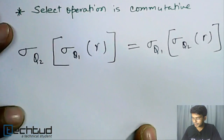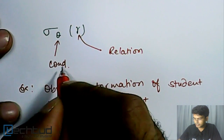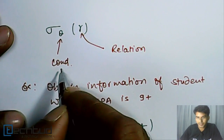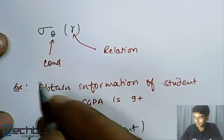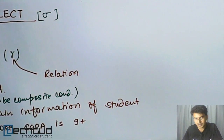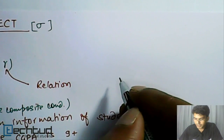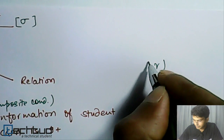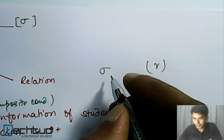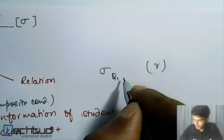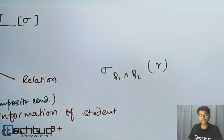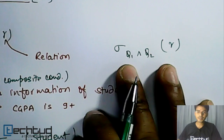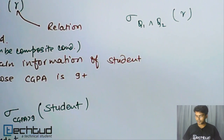Another thing to note is that the condition can be a composite condition. We can merge two or more conditions. For example, on relation R we can apply a filter where the condition is theta1 AND theta2. We can use the logical AND symbol or simply write 'and'. So conditions in the select operation can be composite.